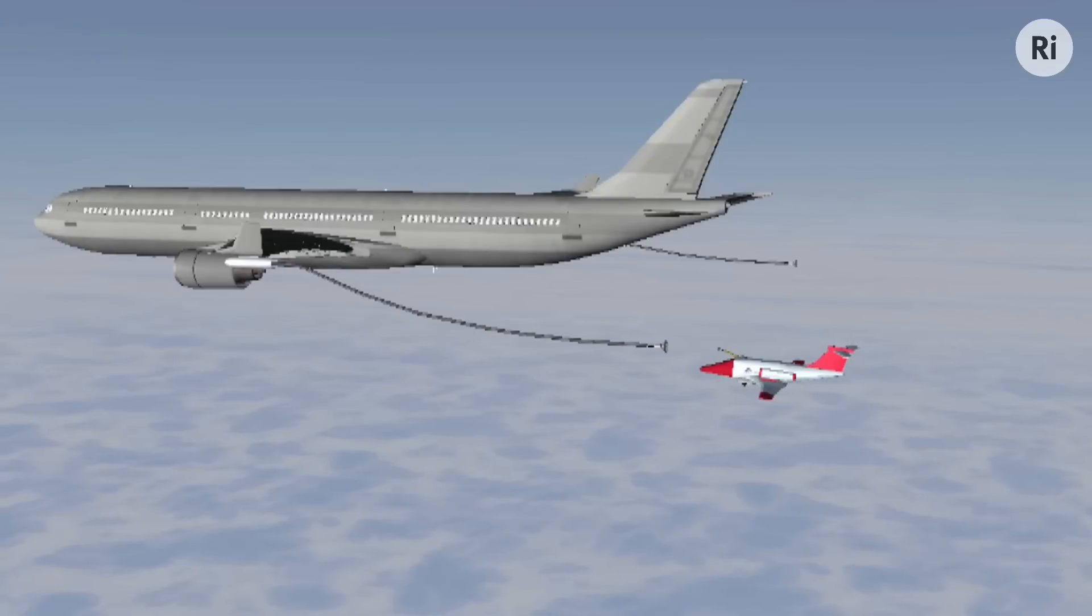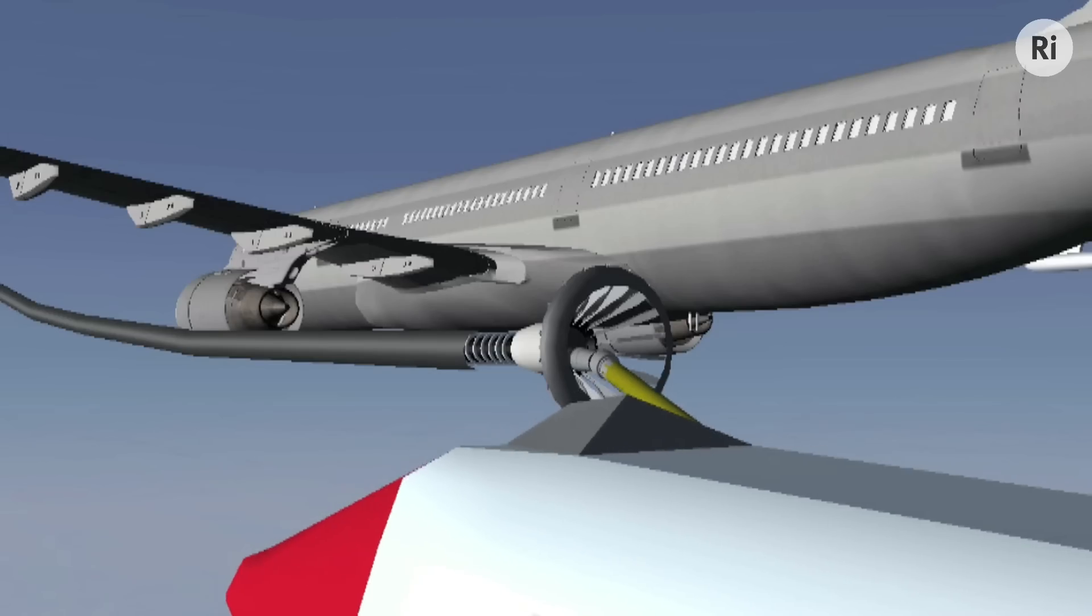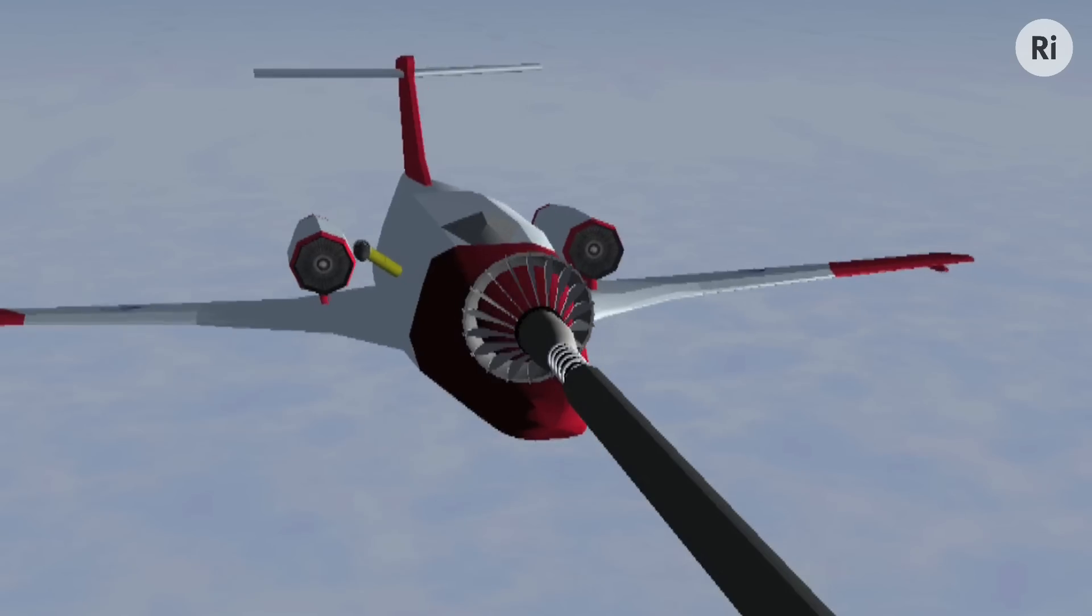Now, it would be easy enough to get the probe into the basket using just the robots alone. But what we're trying to do is to simulate the environment which the receiver aircraft flies in. So we model the flight dynamics of the two aircraft. We model the turbulence. We model the wake of the tanker. And we model the bow wave on the receiver aircraft.